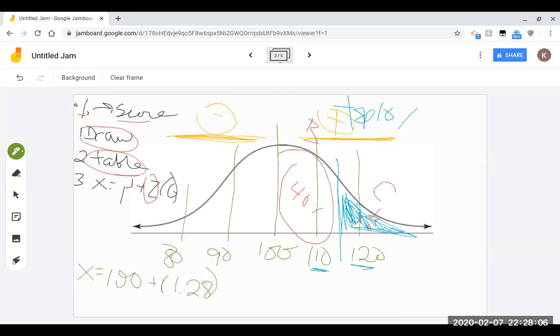So I have 1.28 times 10, and I love it when I do this kind of math, because even I can do this in my head. So 1.28 times 10 is 12.8. So that means this is going to be 100 plus 12.8, and that number is 112.8.